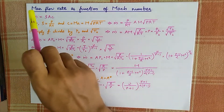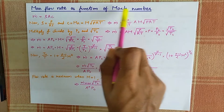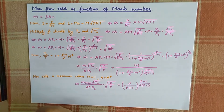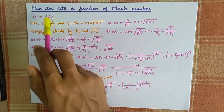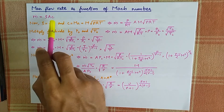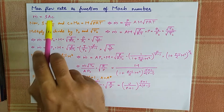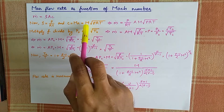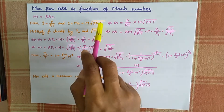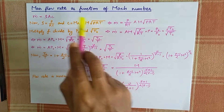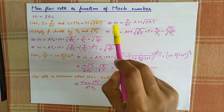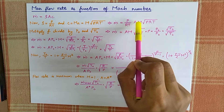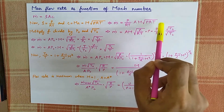The mass flow rate is a function of Mach number. From the continuity equation, m-dot equals rho times A times velocity. The density rho is p divided by RT, and the velocity is Mach number times speed of sound, that is M times the square root of gamma RT. Substituting into the continuity equation, m-dot equals p divided by RT, times A, times M, times the square root of gamma RT.